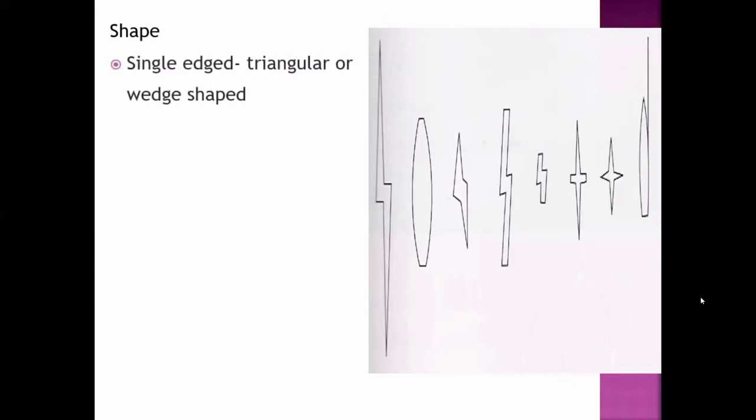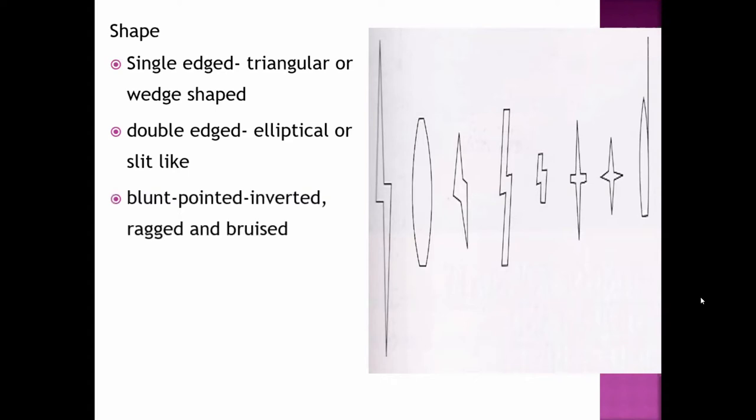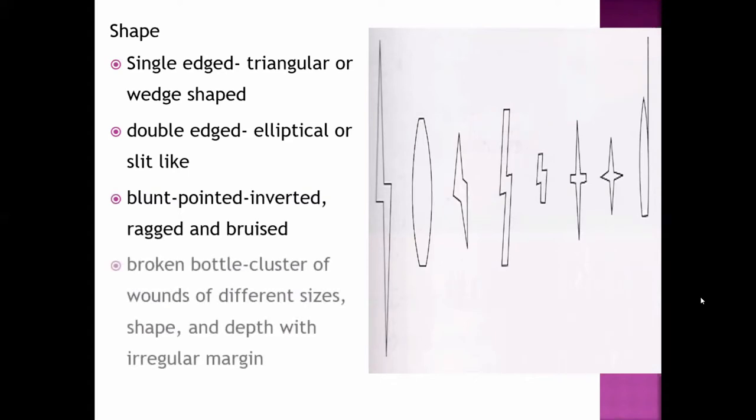If it's single-edged, then you can see triangular or waist-shaped injury. If it's double-edged, then elliptical or slit-like injury is seen. If it's blunt pointed, inverted, ragged and bruised margin is seen. If broken bottle cluster is used, then cluster of wounds of different shape, size, and depth with irregular margin is seen.